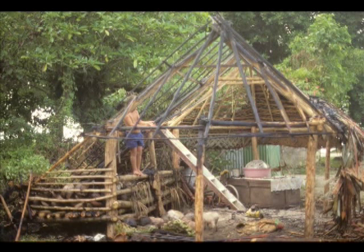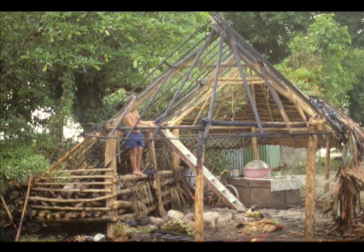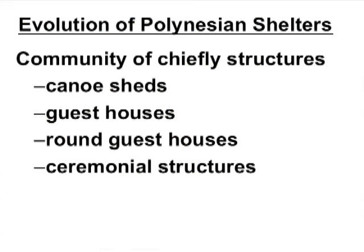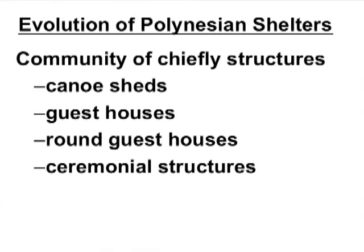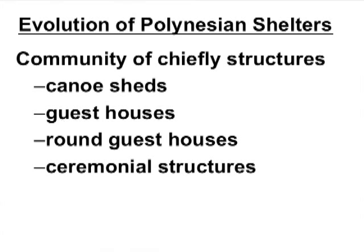This is a cook house that has had the thatch burned off to be replaced. Inside can be seen areas for cooking, storage of fuel, and storage of supplies. The third category of Polynesian structures includes those that are used for community, ceremonial, and political activities. These include large canoe sheds, guest houses, and religious and political ceremonial buildings.